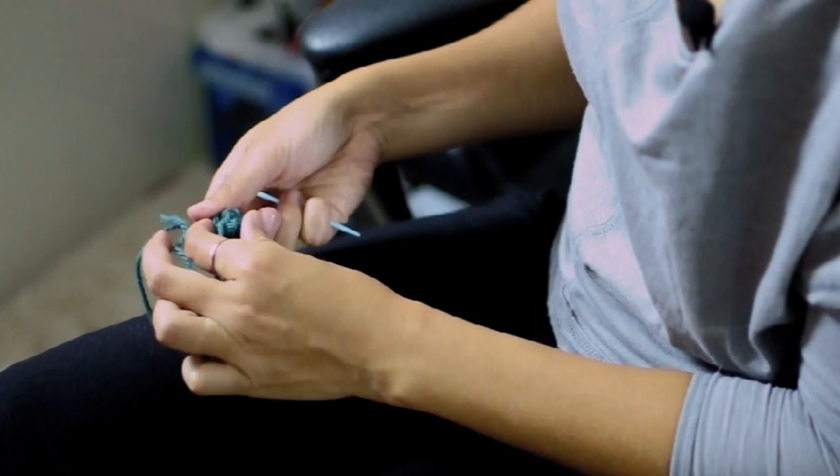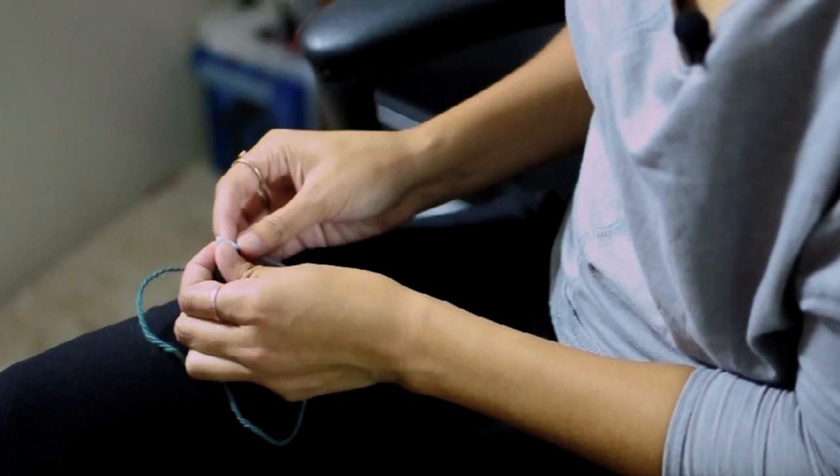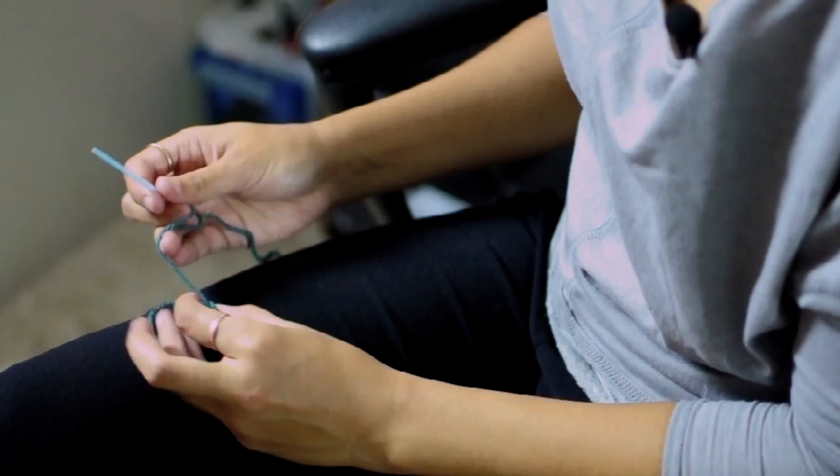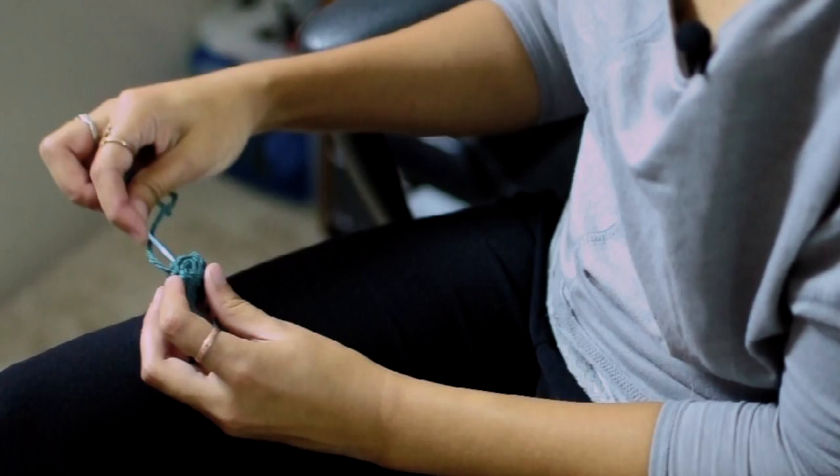And then using the longer end, you're going to thread your darning needle. And then start sewing your button together. Just sew all the way across. And then keep going across until you feel like the button is a little secure.